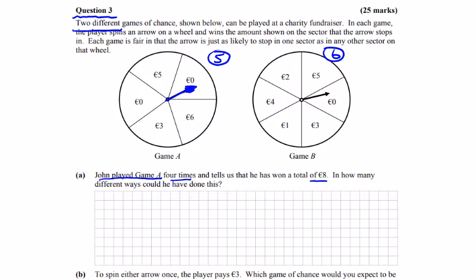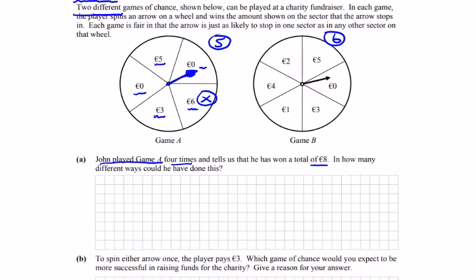In how many different ways could he have done this? We're looking here, we have a 3, a 5, zero, zero, and a 6. So we can't use the 6. It has to be a 3, a 5, zero, and a zero in some order.